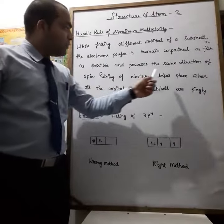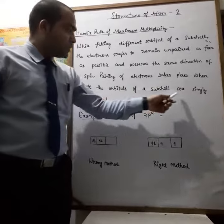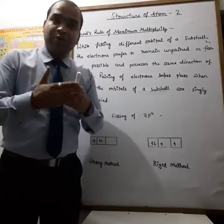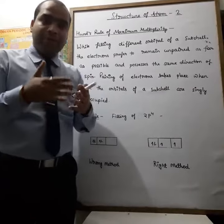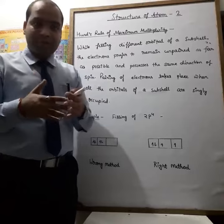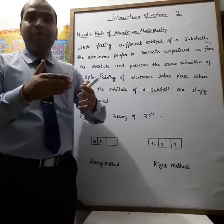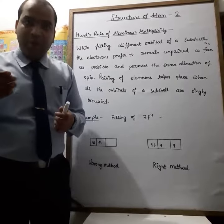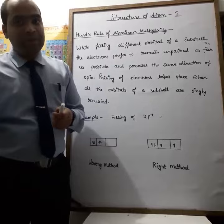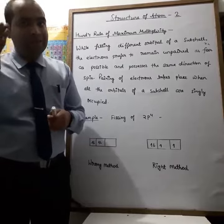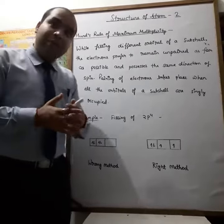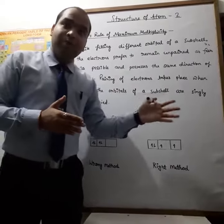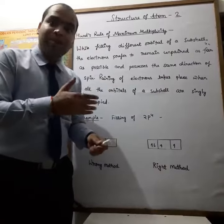Pairing of electrons takes place when the orbitals of a subshell are similarly occupied. That means first of all, when we fill the different orbitals of a subshell, we fill one electron in each orbital in the clockwise direction, remaining unpaired. Pairing of electrons will take place only when all orbitals are singly occupied — that is, all orbitals have at least one electron.